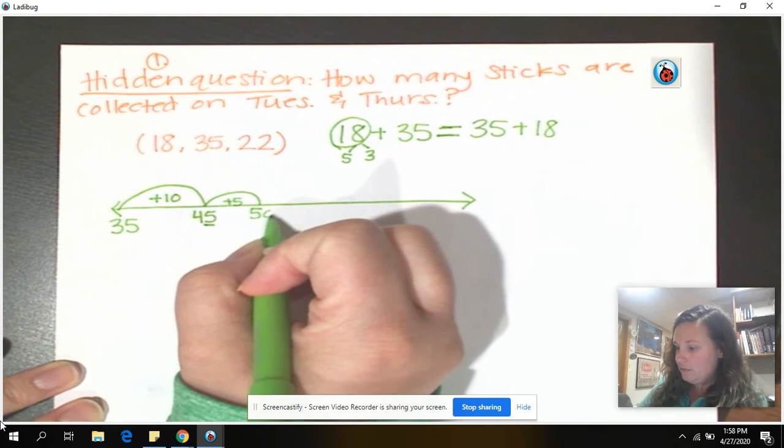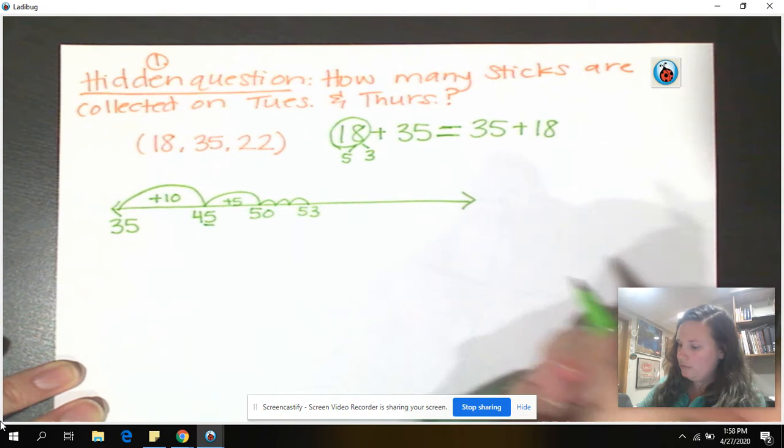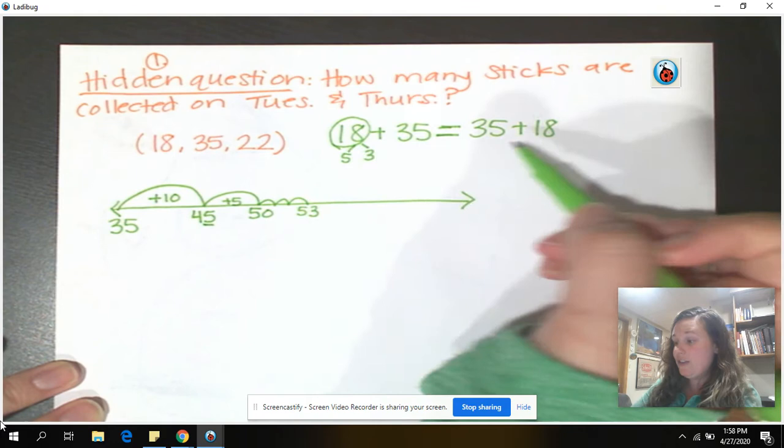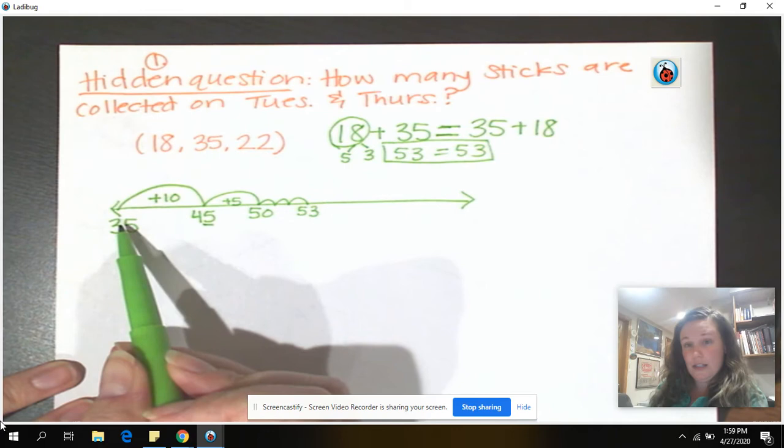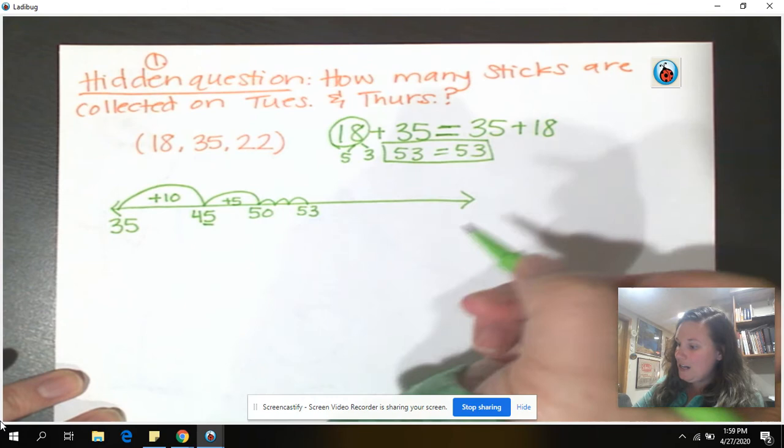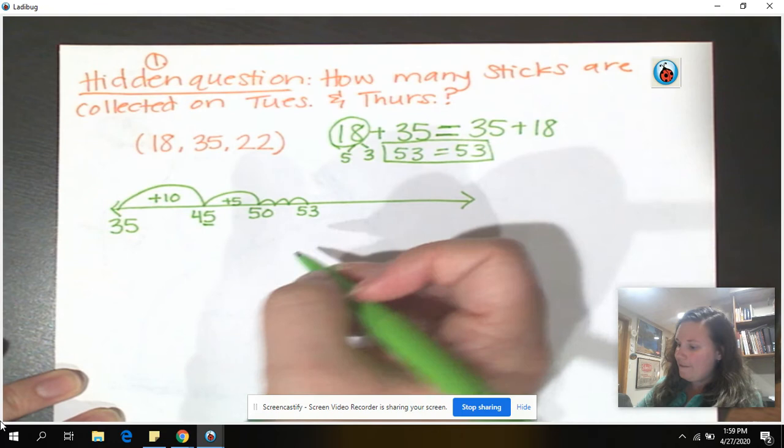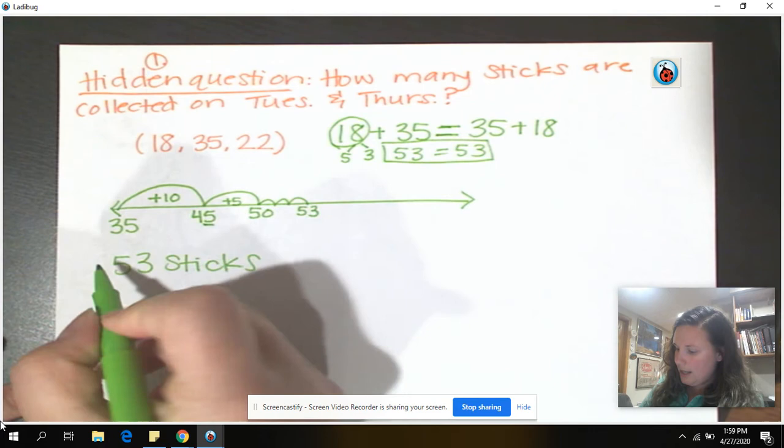1, 2, 3. So 53. So that means that 18 plus 35 equals 53. And 35 plus 18 also equals 53. So again, 53 is the same as 53. You could have absolutely started with 18 here. You just would have had more jumps and more work to do. So we added our collection of Tuesday and Thursday sticks. And we have 53 sticks collected on Tuesday and Thursday.